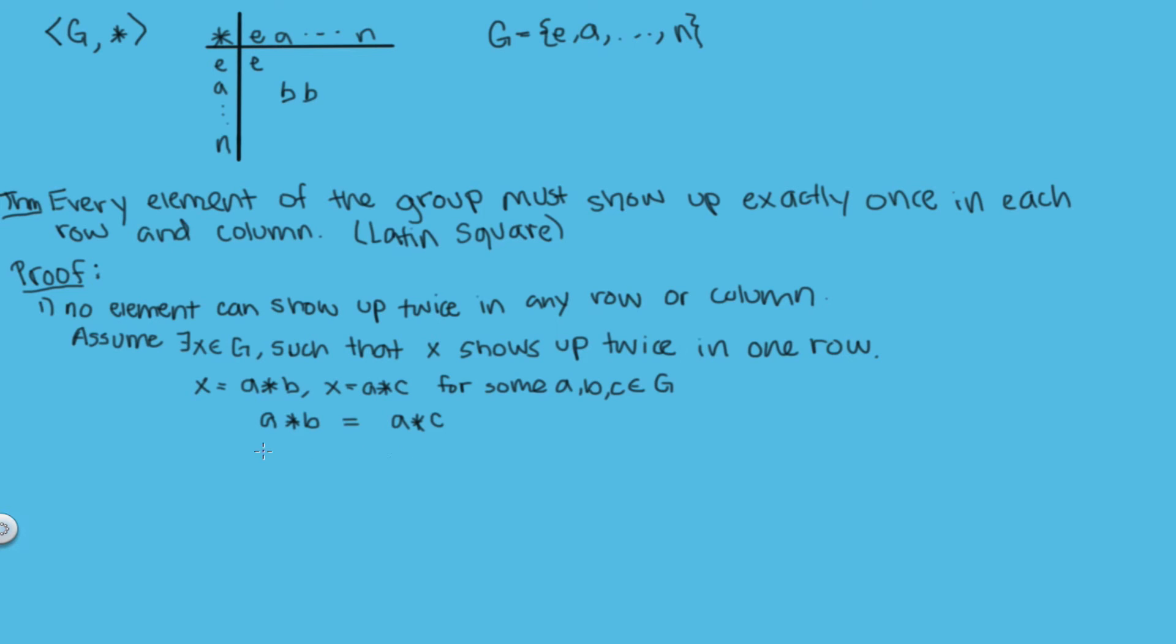But now we notice since we're working with a group, this a has to have an inverse inside of our group. So what would happen if we applied a inverse to both sides? On this side we would get a inverse star a star b and over here we would get a inverse star a star c.